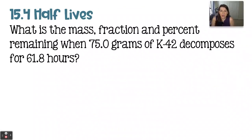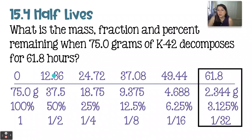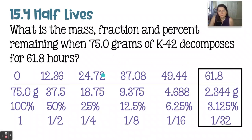The final question is on half-lives. The question asks for the mass, fraction, and percent remaining when 75 grams of potassium-42 decomposes over 61.8 hours. Across the top we look at the number of hours, always beginning at time equals zero. The half-life of potassium-42, which you would have to look up, is 12.36 hours. For each half-life from one step to the next, we add 12.36 because that is the amount of time that passes, and in that time half of the sample breaks down. I like to start at zero and add 12.36 over and over until I reach the time the question asks about.